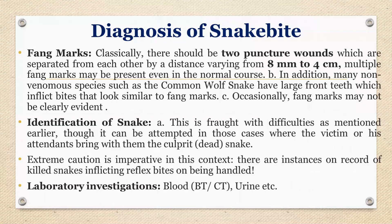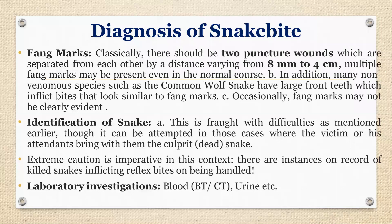Diagnosis of snake bite by fang marks: two puncture wound marks are present, 8 mm to 4 cm distance between them. Fang marks are usually present only in poisonous snake bites, while in non-poisonous snake bites multiple small tooth marks (tip marks) are present. Only two fang marks is the feature of a poisonous snake. Identification of the snake is attempted only if the victim or a relative has brought the dead snake — extreme caution is imperative if the snake is alive.